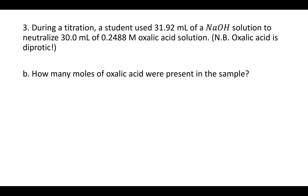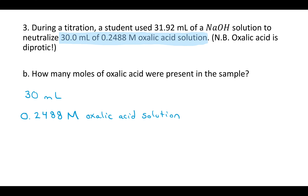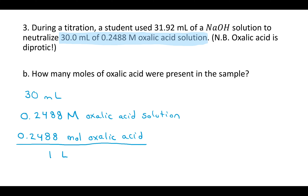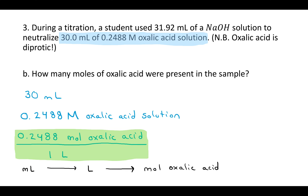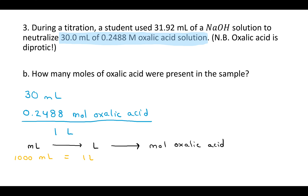Part B asks how many moles of oxalic acid were present in the sample. We have 30 milliliters of oxalic acid at a concentration of 0.2488 molar. Remember, molarity is moles per liter, so I can break that down into 0.2488 moles of oxalic acid over one liter. Now I can see how the units connect: milliliters connects with liters, and then I use the molarity to get from liters to moles. The conversion factors are 1,000 milliliters per liter, and 0.2488 moles per liter from the molarity.